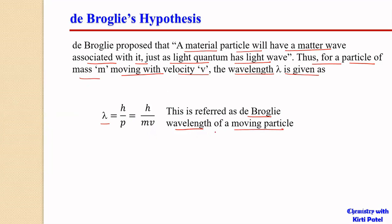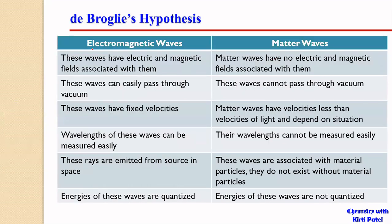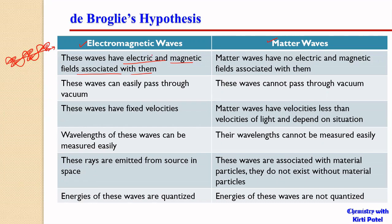This was the first time particles were also being associated with wave natures. De Broglie suggested matter waves. Let us see the differences between electromagnetic waves and matter waves. Electromagnetic waves have electric and magnetic fields associated with them. If this is the direction of propagation of the electromagnetic wave, then there is an electric field and a magnetic field — both perpendicular to each other and also perpendicular to the direction of propagation.